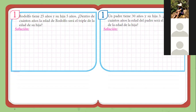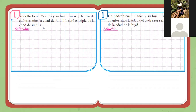Número uno. Dice: Rodolfo tiene 25 años y su hija 5 años. ¿Dentro de cuántos años la edad de Rodolfo será el triple de la edad de su hija? Vamos a poner: presente y futuro. Actualmente tienen 25 y 5, Rodolfo y su hija. ¿Dentro de cuántos años? O sea, tendrán 25 más X años y 5 más X años.